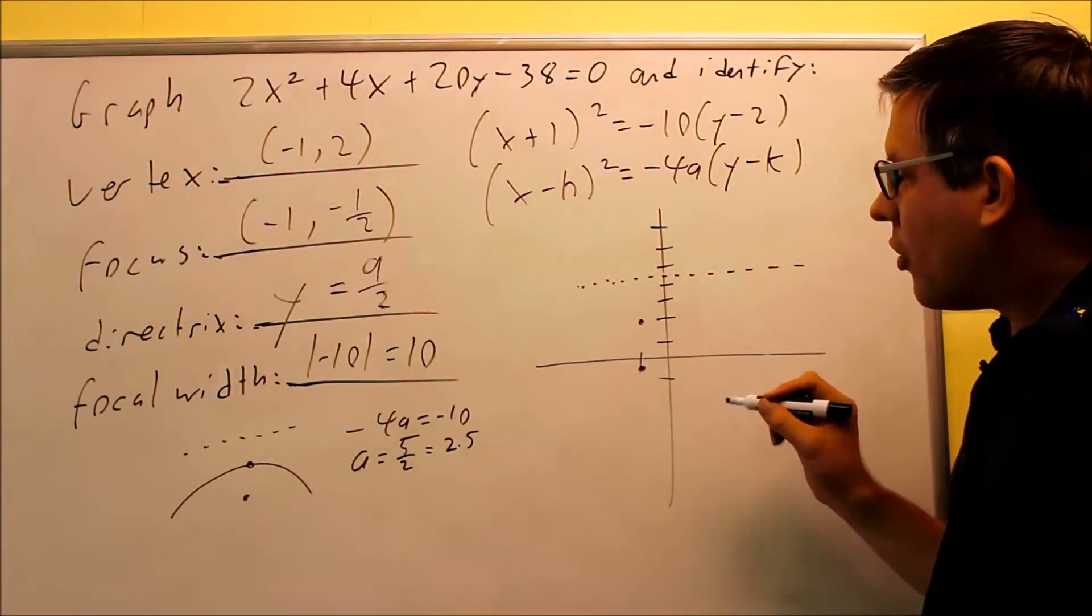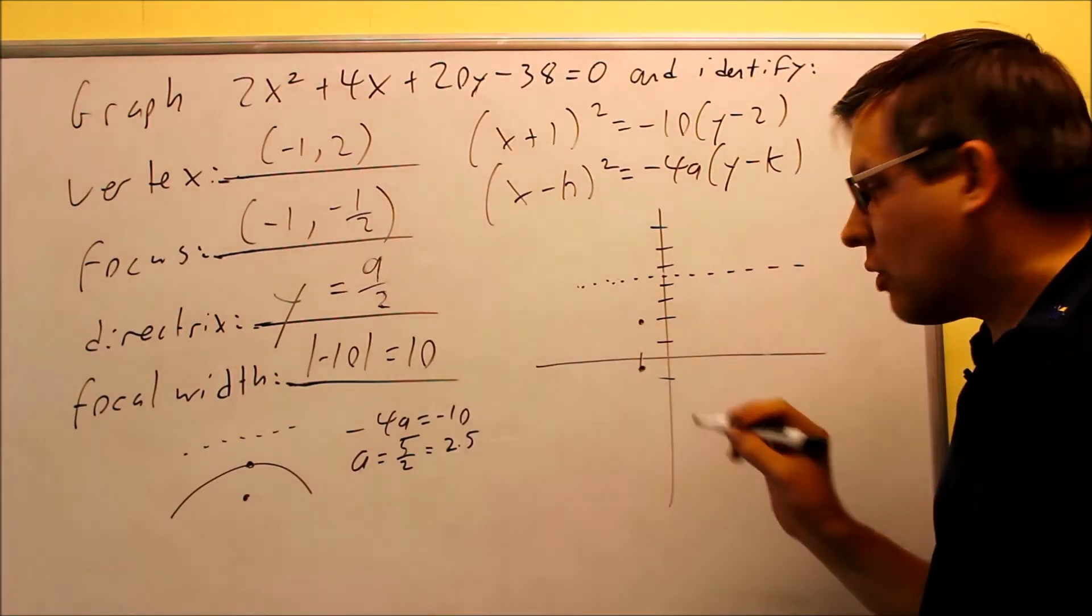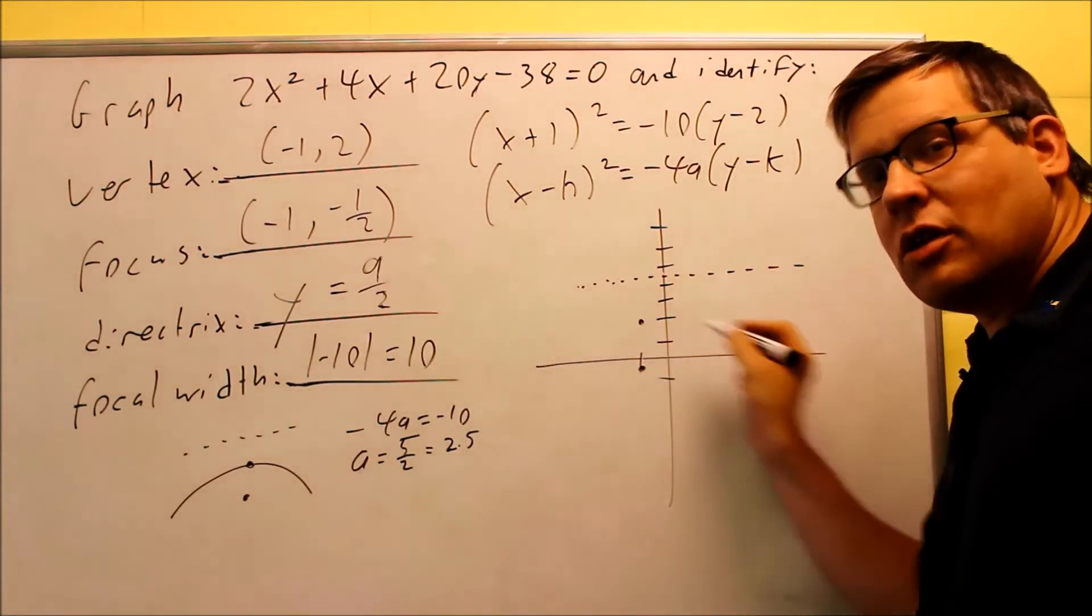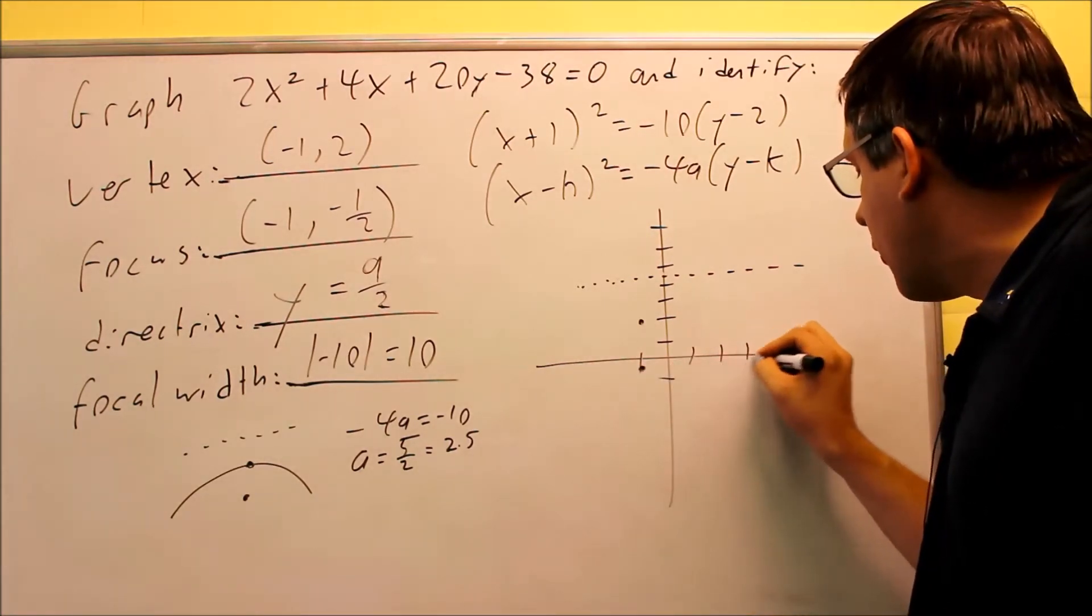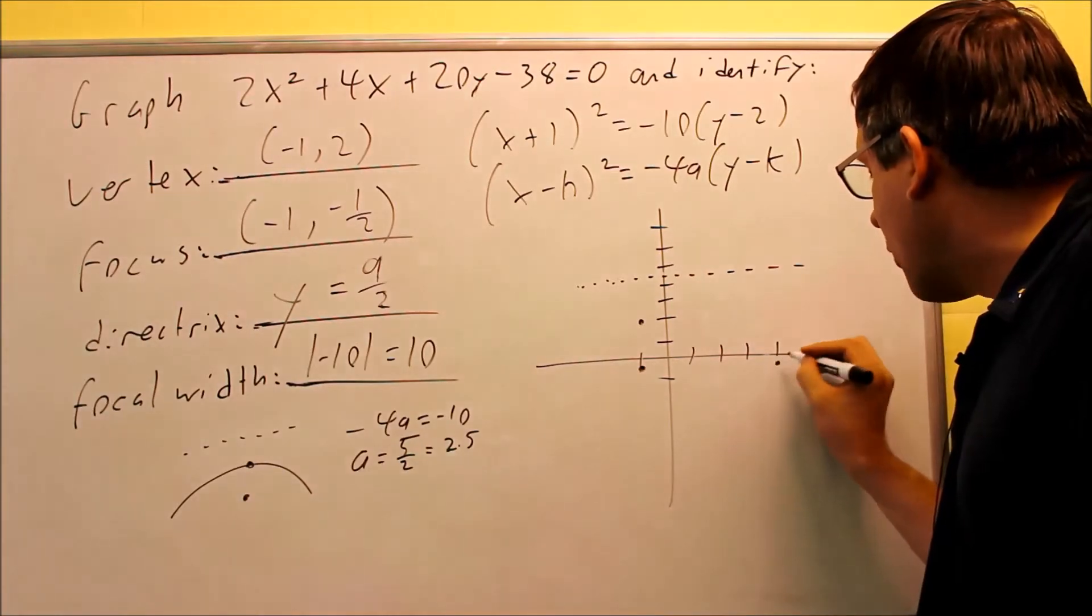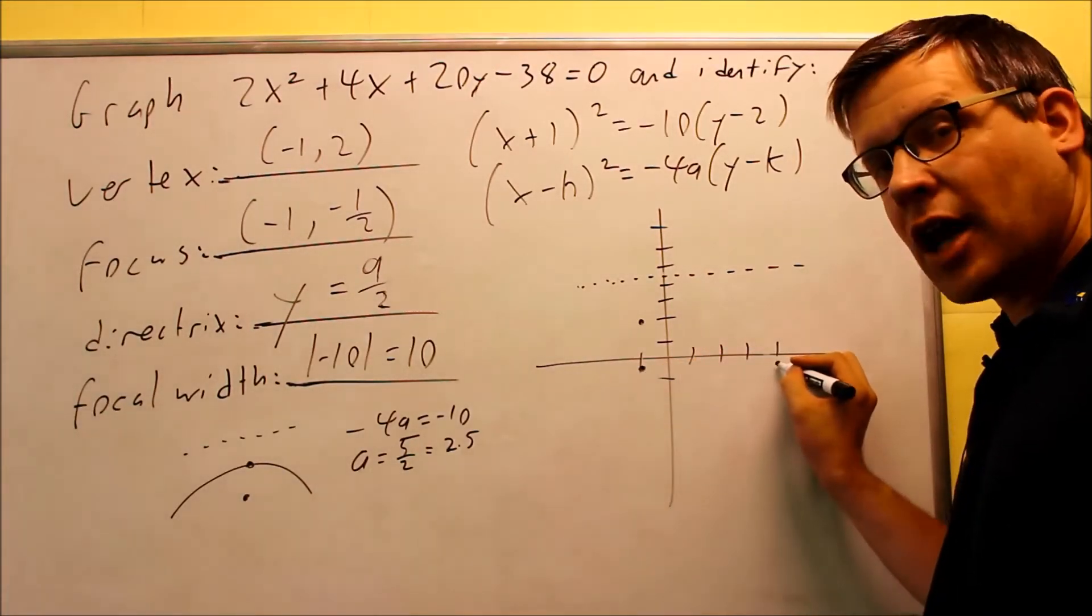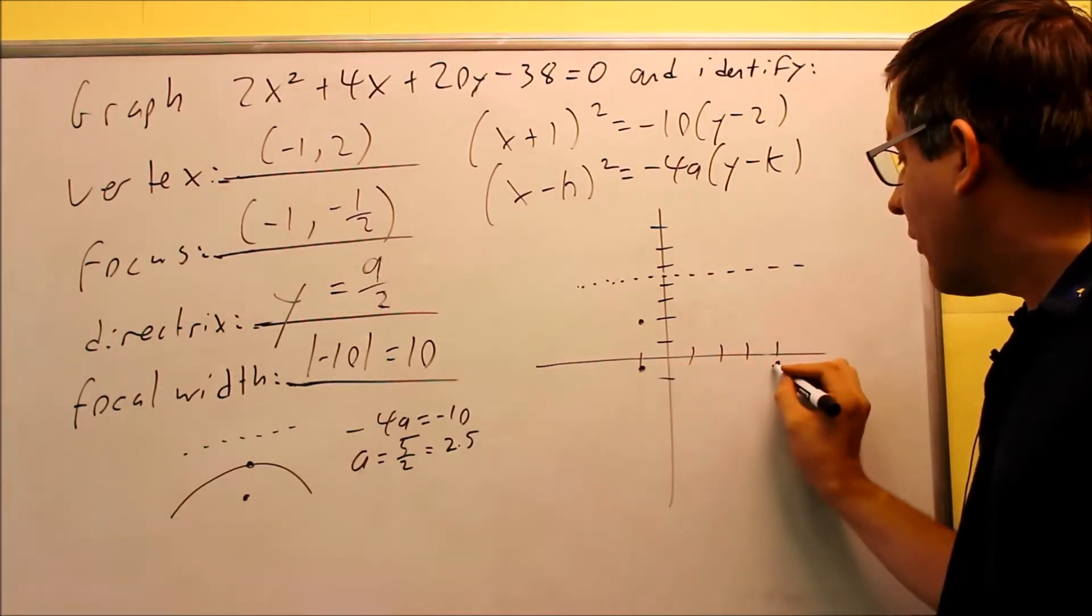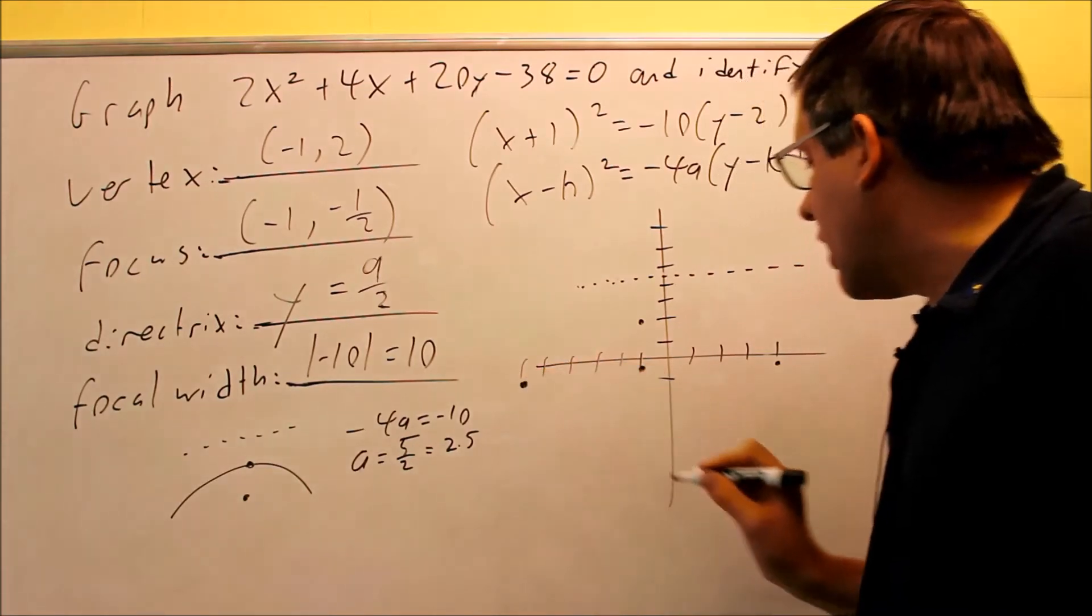At the focus, which is down here, that width needs to be 10. So I want to go 5 in one direction and 5 in the other direction. So here if I go, I have 1, 2, 3, 4, 5, so right here, I want to keep it at the same y value as the focus, so that's also going to be at negative 0.5. So I went 5 that way, and I'm going to do 1, 2, 3, 4, 5 this way, make another dot right there.